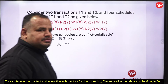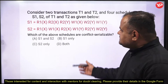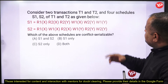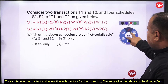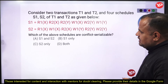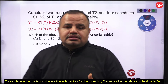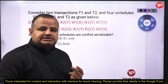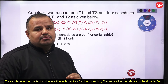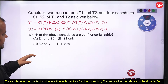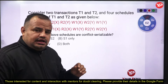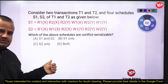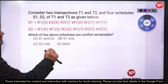Next, a two-marks problem related to transaction and concurrency protocol. Consider two transactions T1 and T2 and two given schedules. We have to find which of the following schedules are conflict serializable. We have two types of serializability: conflict and view — conflict is the most important. In previous GATE computer science papers, almost 20 to 30 problems are based on conflict serializability. So keep in mind this is a very important topic.